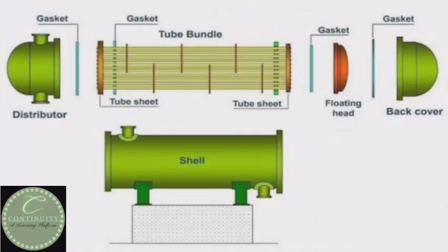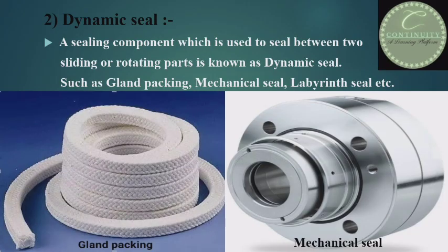A sealing component which is used to seal between two sliding or rotating parts is known as a dynamic seal — such as gland packing, mechanical seal, labyrinth seal, etc.